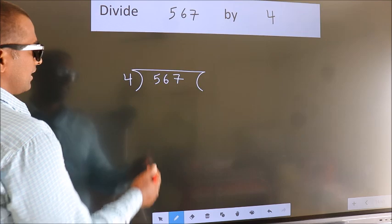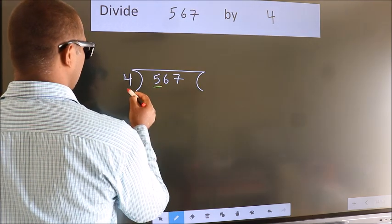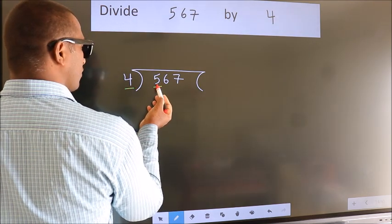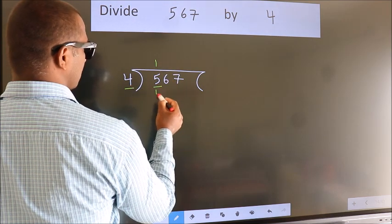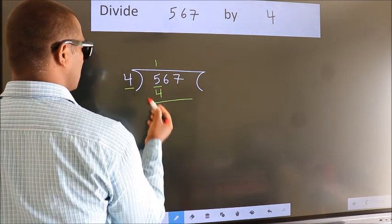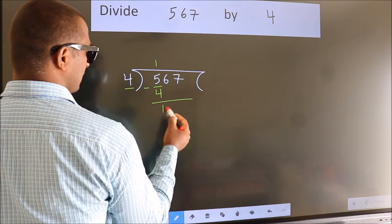Next, here we have 5, here 4. A number close to 5 in 4 table is 4 once 4. Now we should subtract. We get 1.